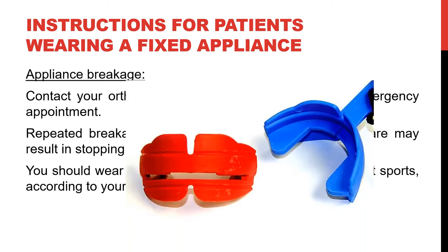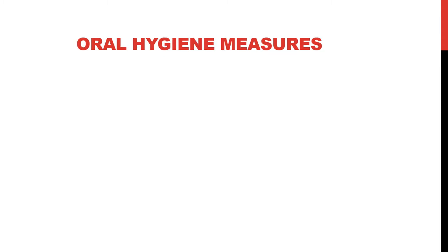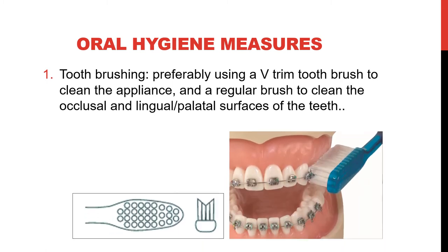This is a mouth guard that can be worn by the patient during contact sports. Finally, we should ask the patient to maintain regular visits and to follow the orthodontist's instructions. We ask the patient to do good tooth cleaning, but we have to demonstrate how to do proper oral hygiene measures. Toothbrushing is preferably done using a V-trim toothbrush to clean the appliance, and a regular brush to clean the occlusal and lingual or palatal surfaces of the teeth.